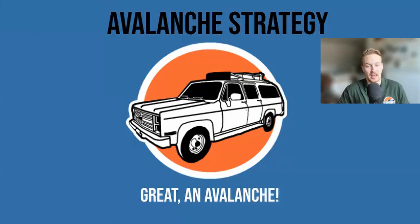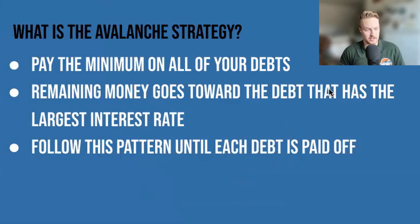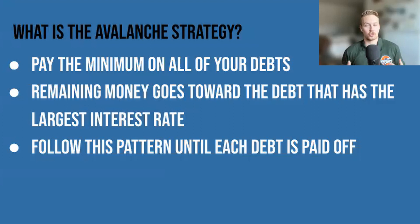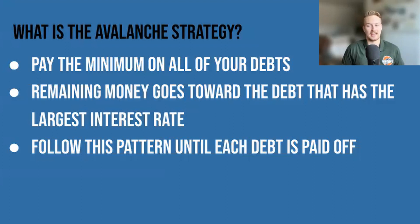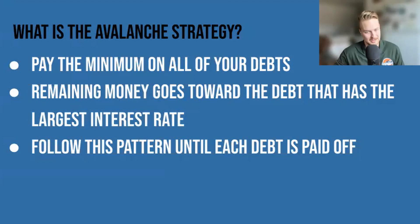We're going to start with the Avalanche strategy. The Avalanche strategy is somewhat what it sounds like — you're starting at the top of the mountain and crashing down. In short, you're paying the minimum on all your debts, but then taking the extra money you have remaining and tackling the debt that has the largest interest rate. Once that debt is paid off, you take the amount you were putting into it and put it into the debt with the next highest interest rate. You continue this process until everything is paid off.